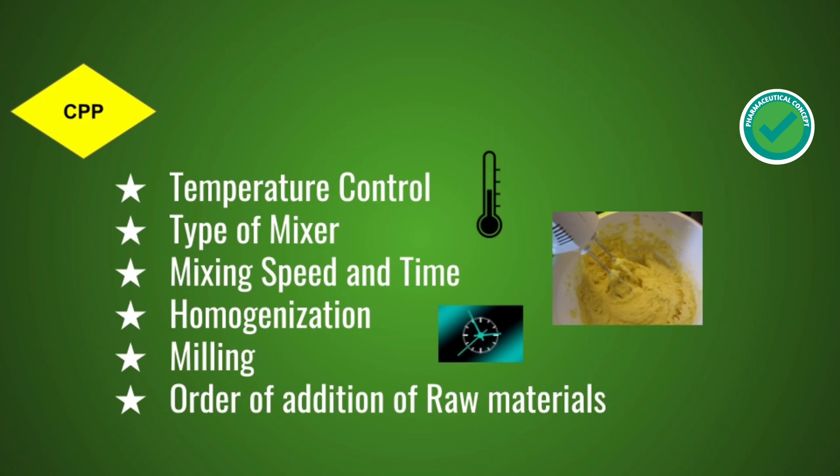CPP parameters include temperature control, type of mixer used, mixing time and speed, homogenization, milling, and order of addition of raw materials.